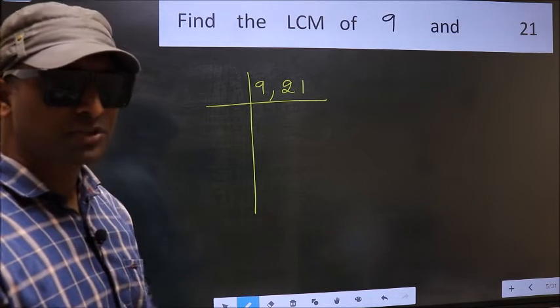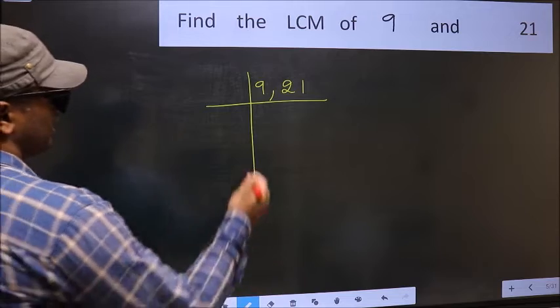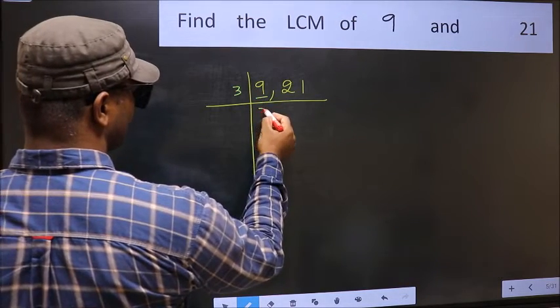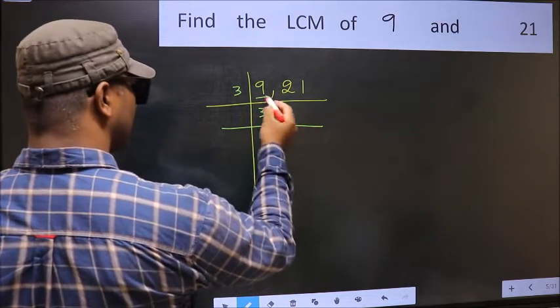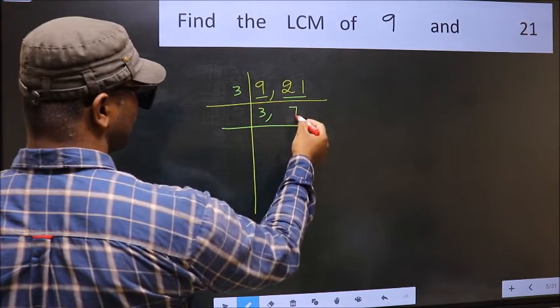Now you should focus on the first number which is 9 here. 9 is 3 times 3. The other number 21. When do we get 21 in the 3 table? 3 times 7 is 21.